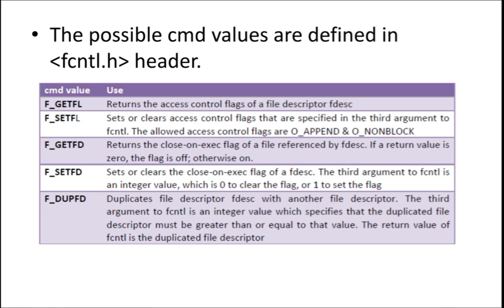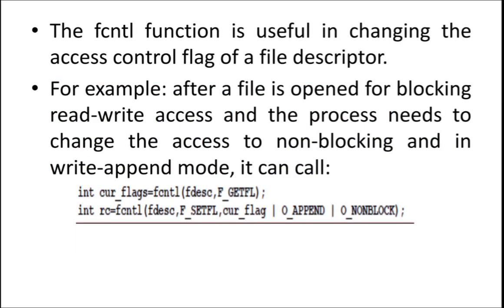FCNTL is mainly used to check the flags that are set to a particular file — for example, access control flags. If you want to know what the permissions are for a file — read permission, write permission — you can do that using F_GETFL. If you want to change the flags, you can use F_SETFL. If you want to know whether the close-on-execute flag is on or off, you can use F_GETFD. You can clear the value of the close-on-execute flag using F_SETFD. If you want to create a duplicate file descriptor, you can do that using DUPFD.